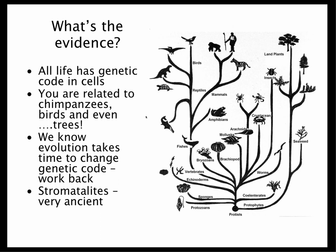Scientists have a fairly good idea of how long it takes for genetic code to change and to make new animals. Our closest living relative, the chimpanzee, we probably separated from a common ancestor a few million years ago. We can go back 200 million years to when mammals first started, back to when we were fish-type creatures, back to when animals first evolved a backbone — the vertebrates. And tracing back further in time, we get some idea of when life itself first appeared.